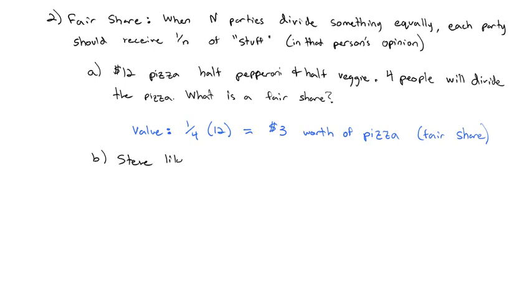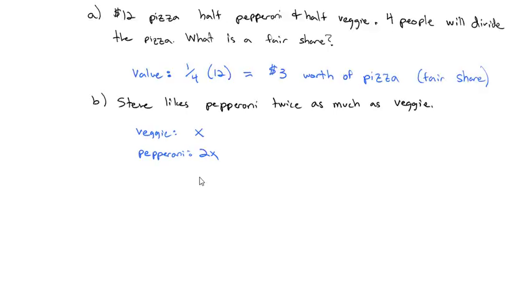For example, Steve likes pepperoni twice as much as veggie pizza, which means we could think about Steve's love for the veggie pizza to be maybe just x. However much value he places on those veggie slices is x, and then the value he places on a pepperoni slice would be double that, 2x. Typically, a pizza has eight slices, so the veggie has four slices and the pepperoni has four slices, which means the value that Steve is placing on the four slices of veggie is 4x. And the value he's placing on the four slices of pepperoni is 2x times 4, or 8x, which means we've got a total value of 12x for the total pizza.